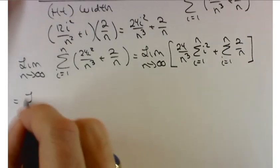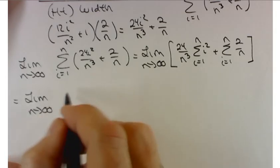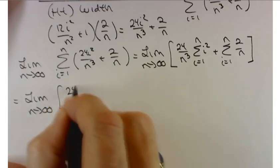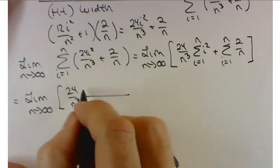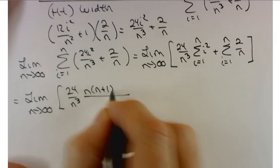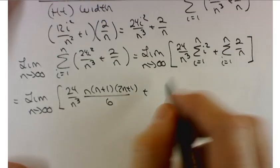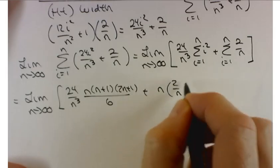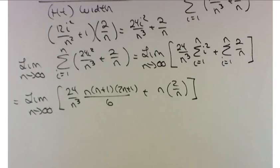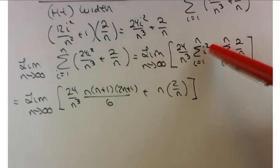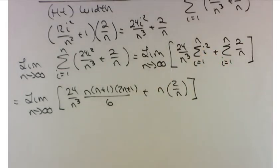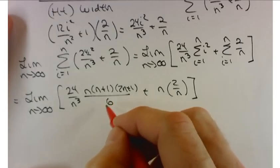Let's keep going. Limit as n approaches infinity of 24 over n³ times n times (n + 1) times (2n + 1) over 6 plus n times 2 over n. So all I did here was I filled in my formula for the sum of the first n squares. Now I get a little cancellation here. Let's do some cancellation for this one.